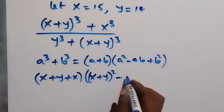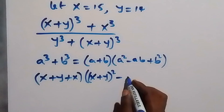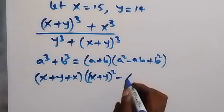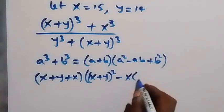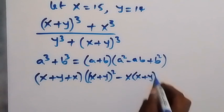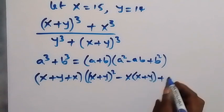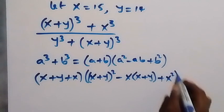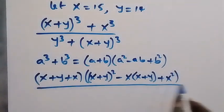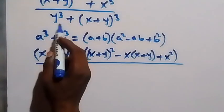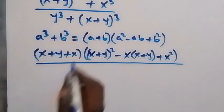Continuing the numerator: minus ab, that's (x plus y) times x, then plus b squared which is x squared. We are done with the numerator factorization.